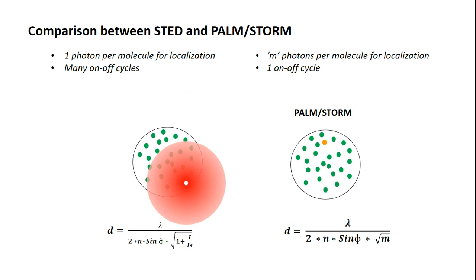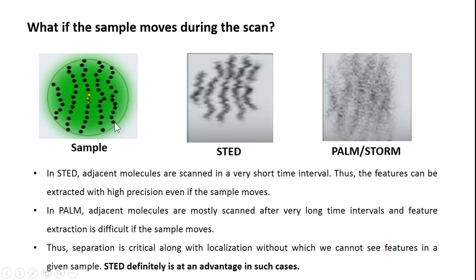In PALM/STORM, when one molecule is active all others are depleted. Another key advantage of STED is that when the sample moves during scanning, adjacent molecules are scanned in very short time intervals so features can be extracted with high precision. In PALM/STORM, adjacent molecules are mostly scanned after very long time intervals due to random excitation, making feature extraction more difficult. Separation accuracy is critical alongside localization precision, and STED is advantageous in such cases.